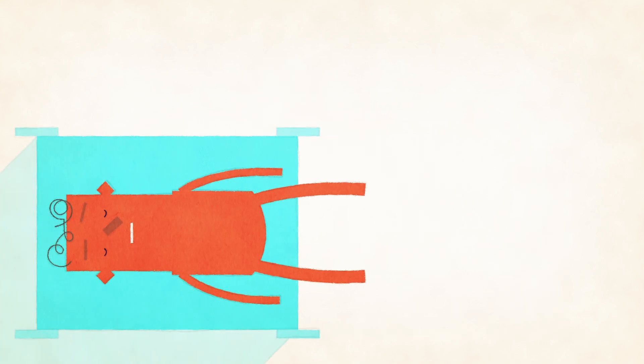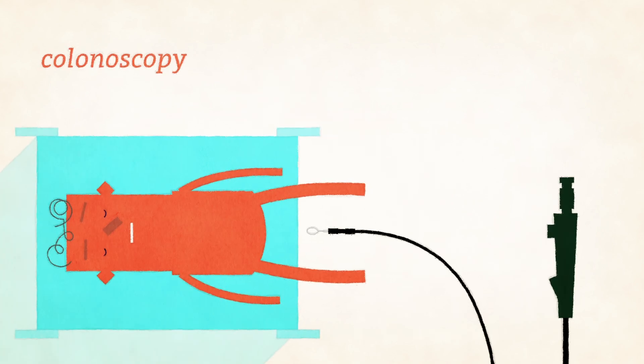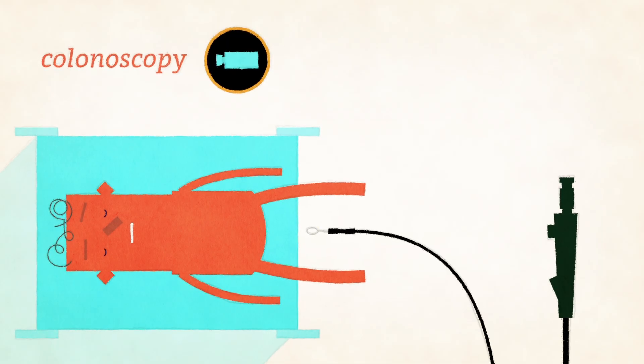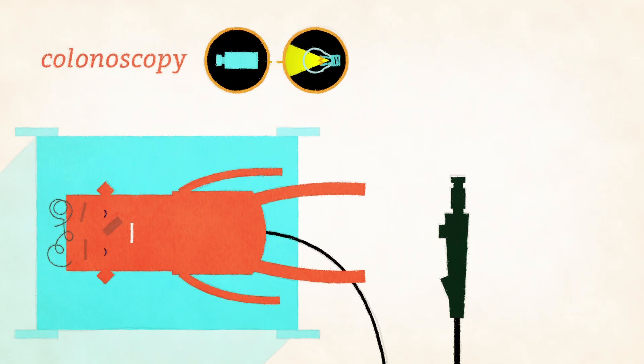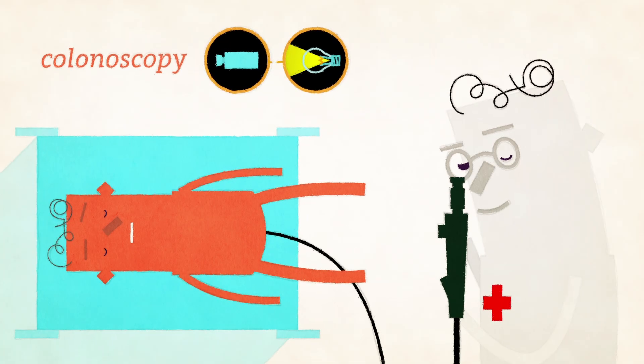Screening can be done with various tests. Colonoscopy involves a long, thin, flexible tube that's fitted with a video camera and light at the end, and placed internally to examine the colon for polyps.